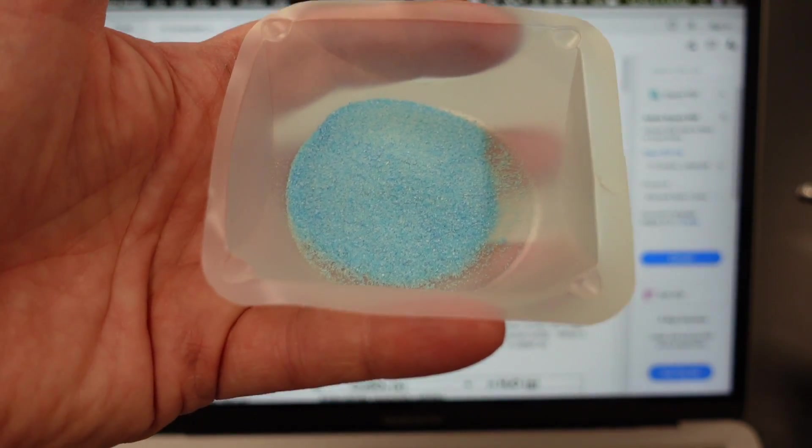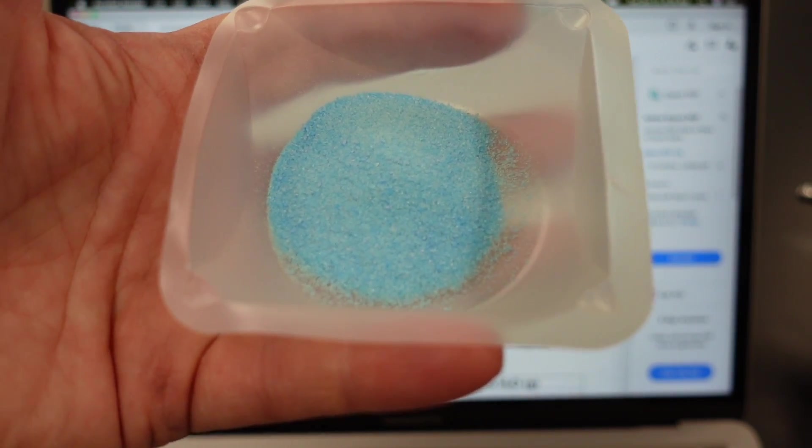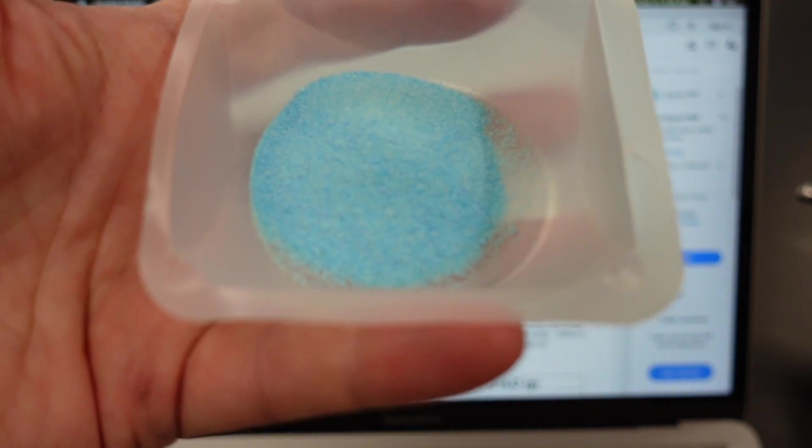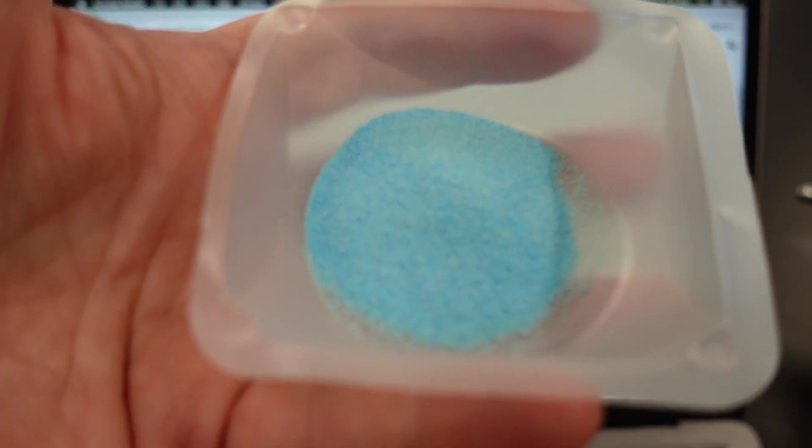This is copper sulfate hydrate. There is water trapped inside the crystal lattices of the copper sulfate crystals. That's actually what's making it blue. Different hydrates have different colors.